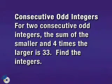For two consecutive odd integers, the sum of the smaller and four times the larger is 33. Find the integers.